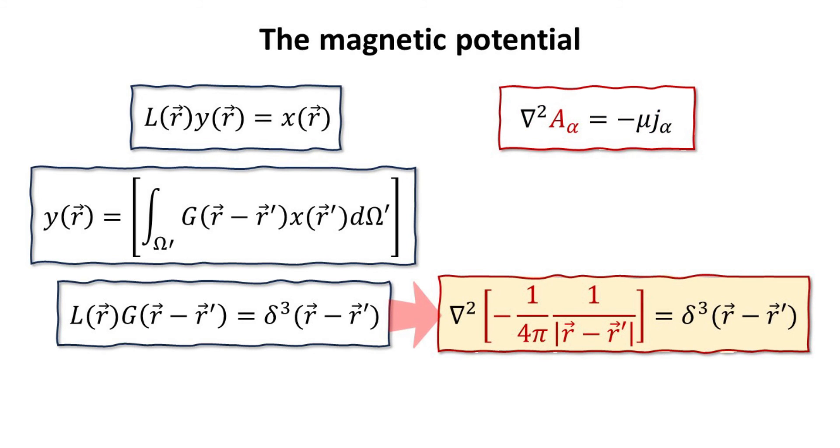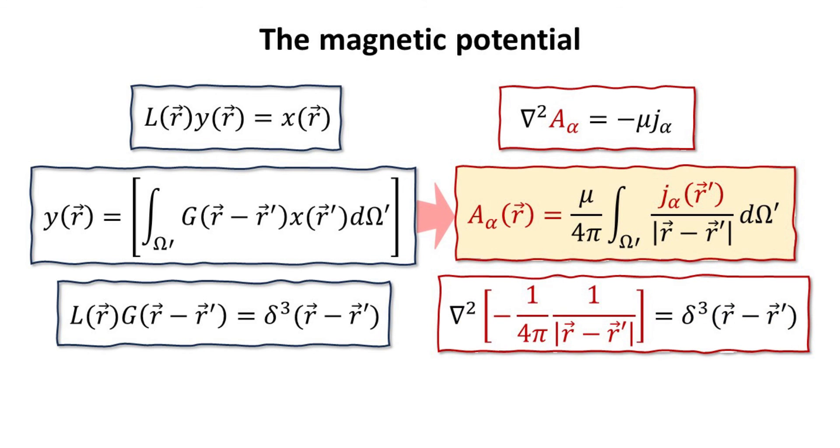We also know the Green's function for our Laplacian operator. This allows us to write down the expression for the vector potential A in terms of the source function, which is the current density J.